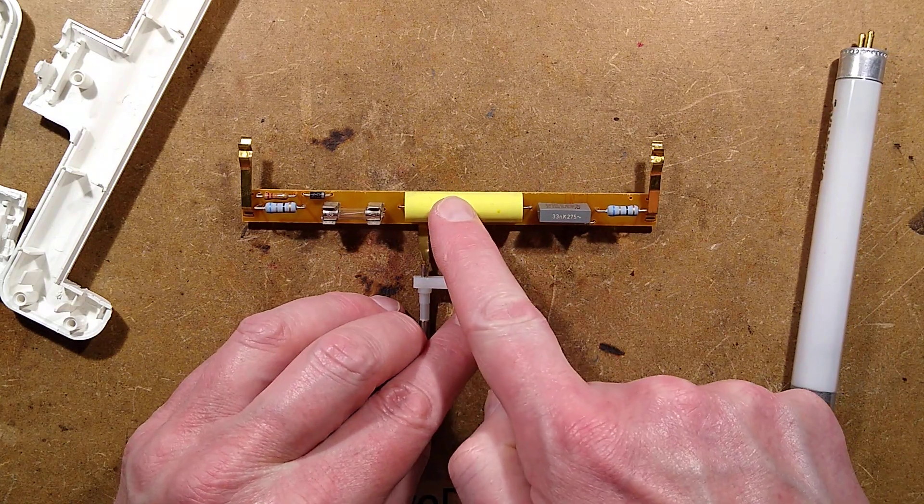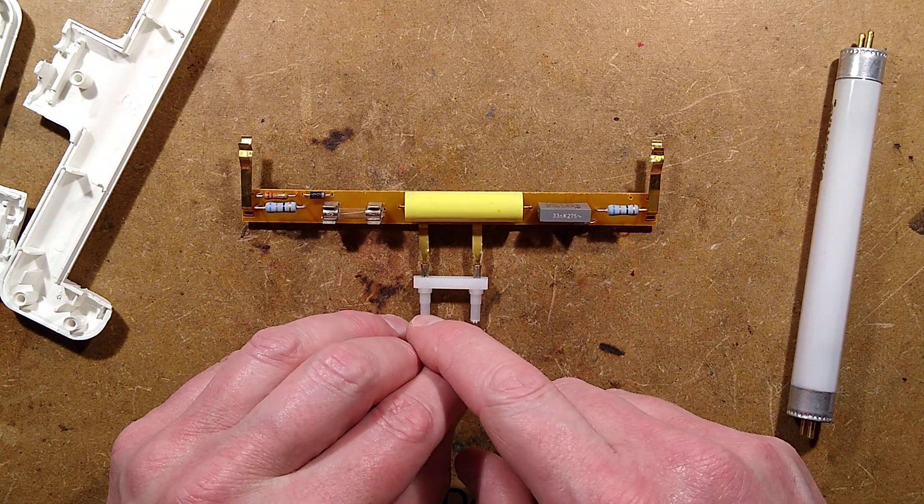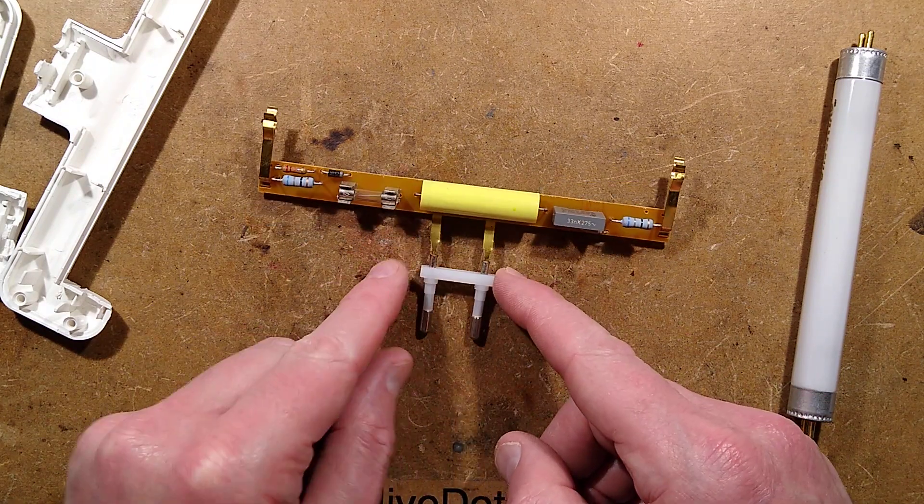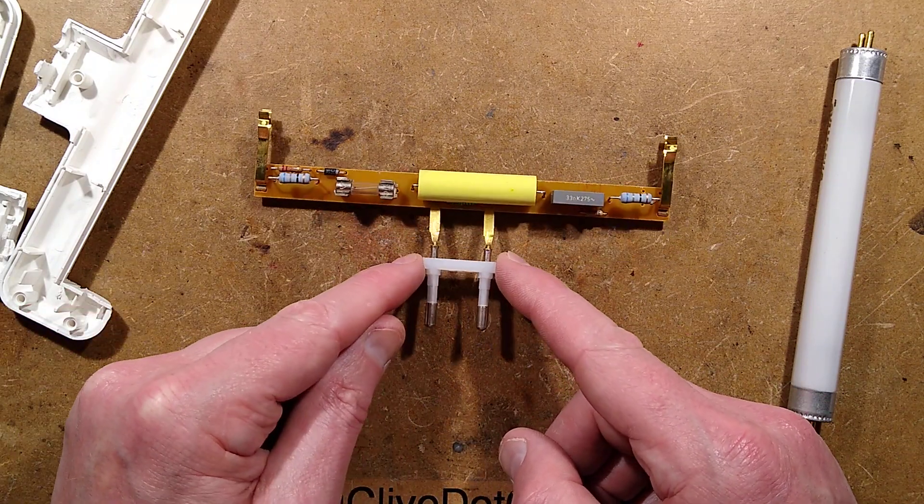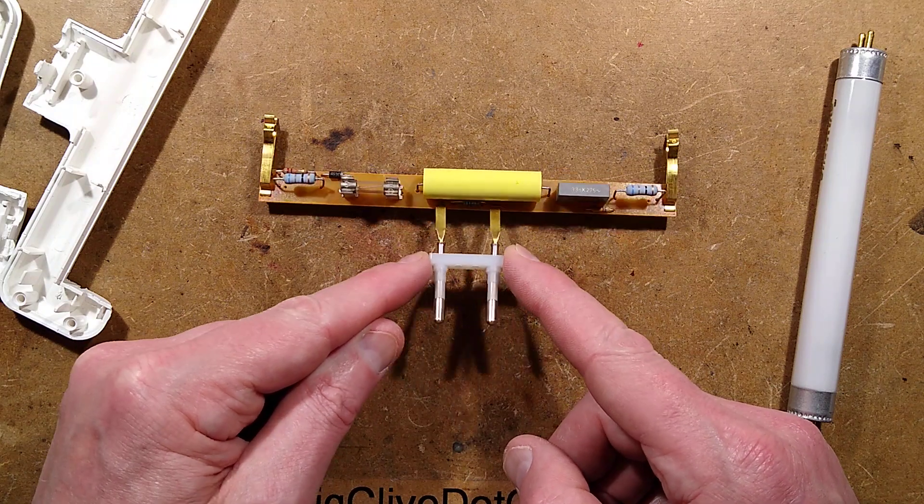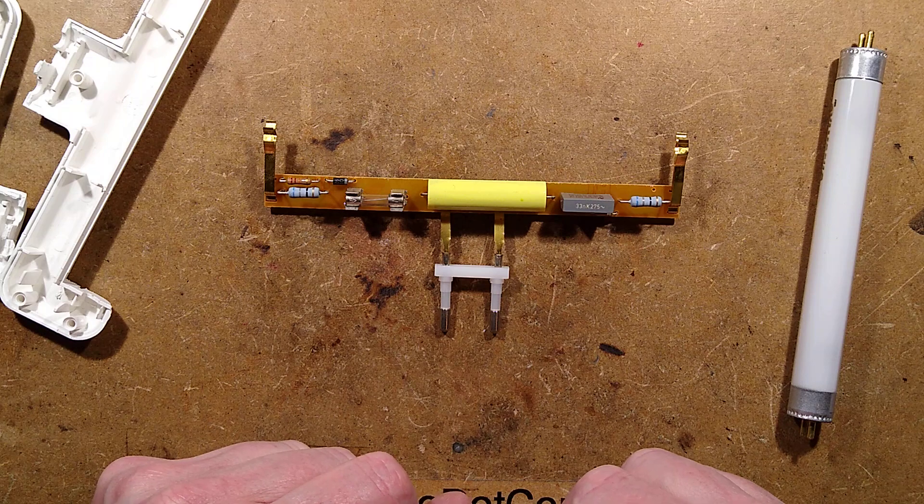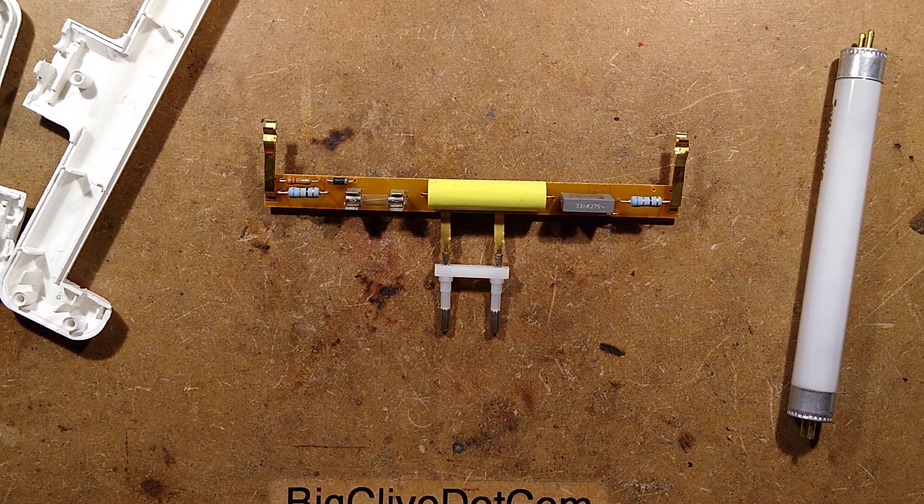So there's the main dropper capacitor, there's a fuse—that's nice—a couple of resistors, capacitor, there's a diode at that end. Right, tell you what, I'm going to take a little picture of this circuit board and we shall reverse engineer it. One moment please.